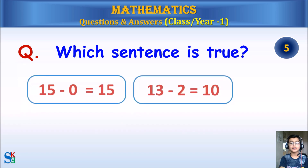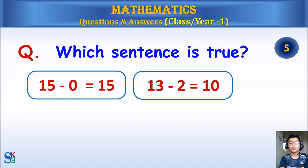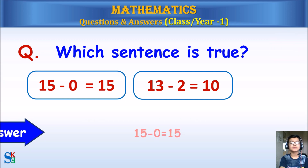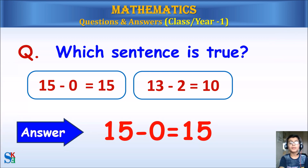Which sentence is true? 15 minus 0 equals 15, or 13 minus 2 equals 10? Answer: 15 minus 0 equals 15, because 13 minus 2 is equal to 11, not 10.